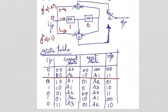When the current state is 10 and you apply 1 as input, the 1 will be shifted to this place, making the next state 11 — that is S3. The corresponding output is 10.